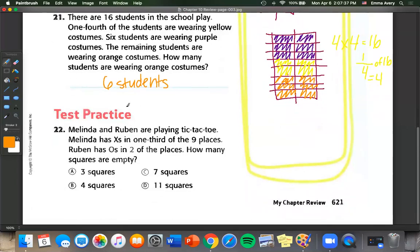Last one. Melinda and Ruben are playing tic-tac-toe. Melinda has X's in one third of the nine places. Ruben has O's in two of the places. How many squares are empty? Let's draw ourselves a tic-tac-toe board. It tells us Melinda has X's in one third. Well, one third of nine is three because three plus three plus three equals nine. We can also figure that out because there are three rows. So we know she fills in one whole row. Ruben has O's in two of the places. So how many spots are left? Well, one, two, three, and four. We have four spots left.